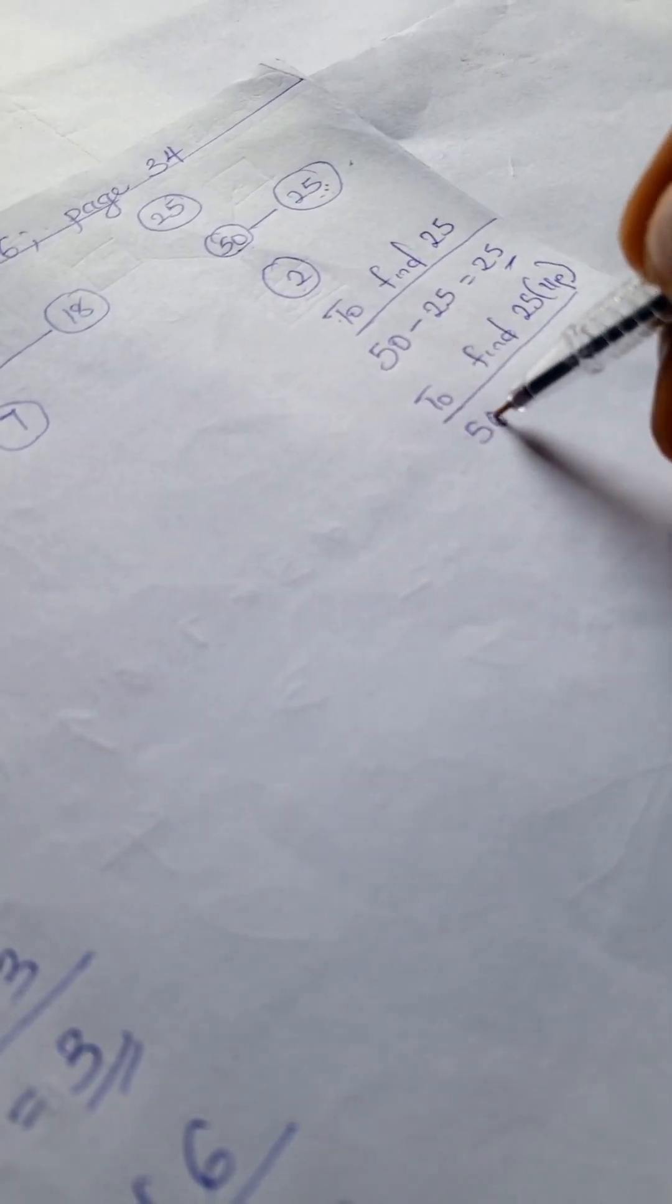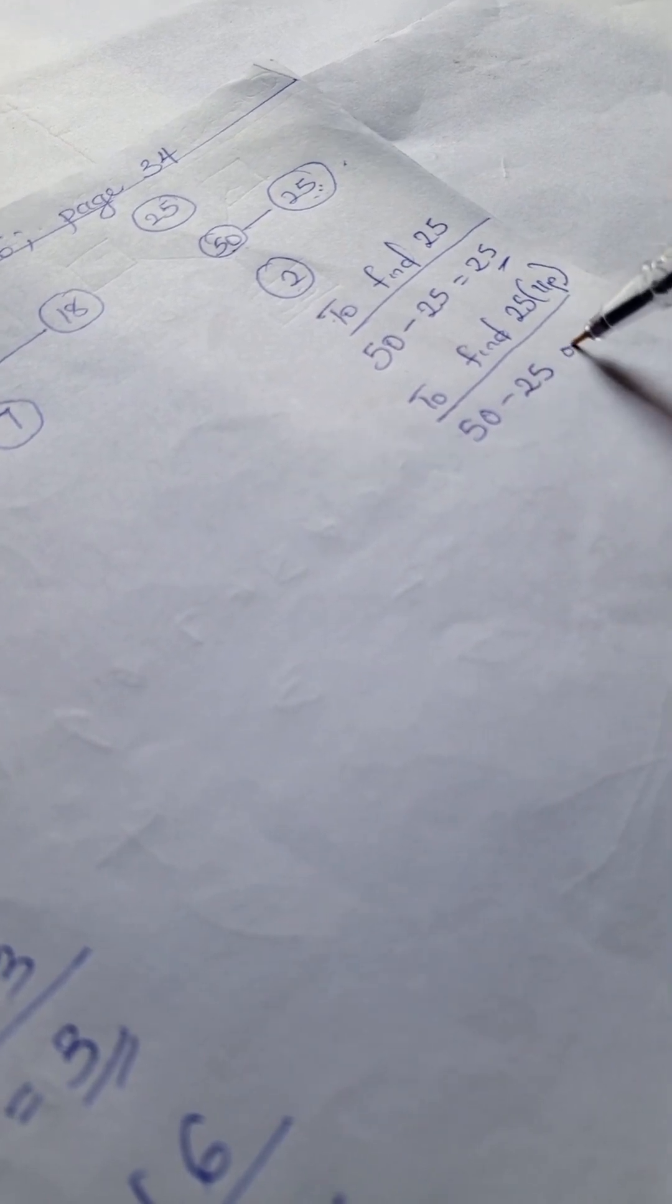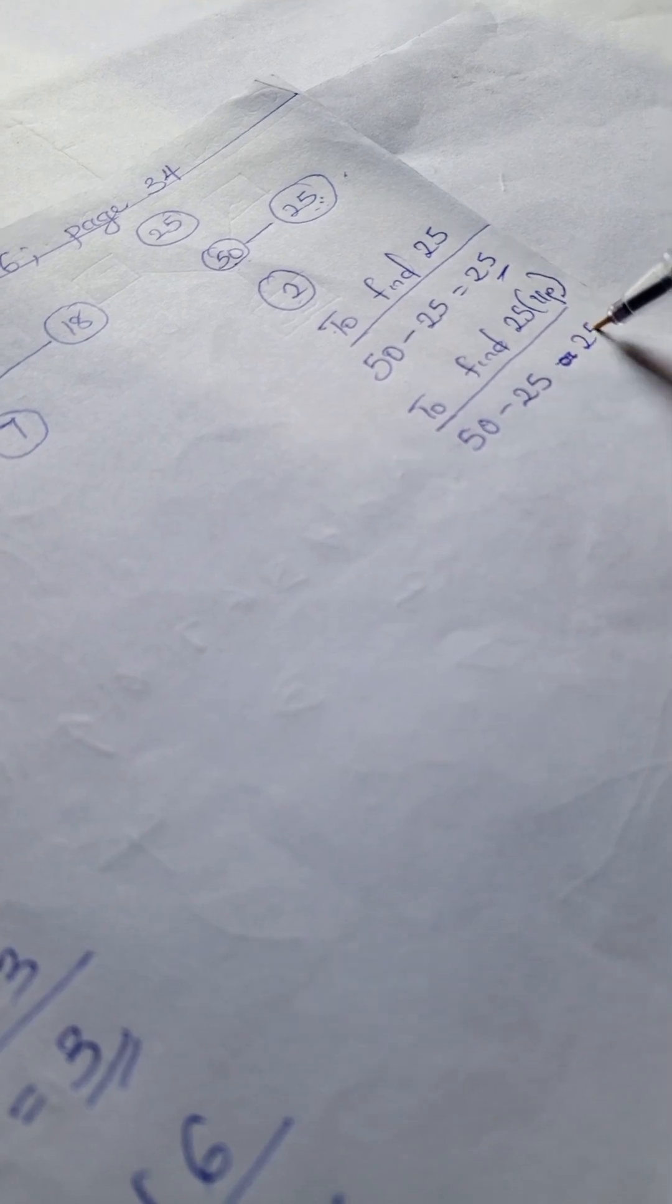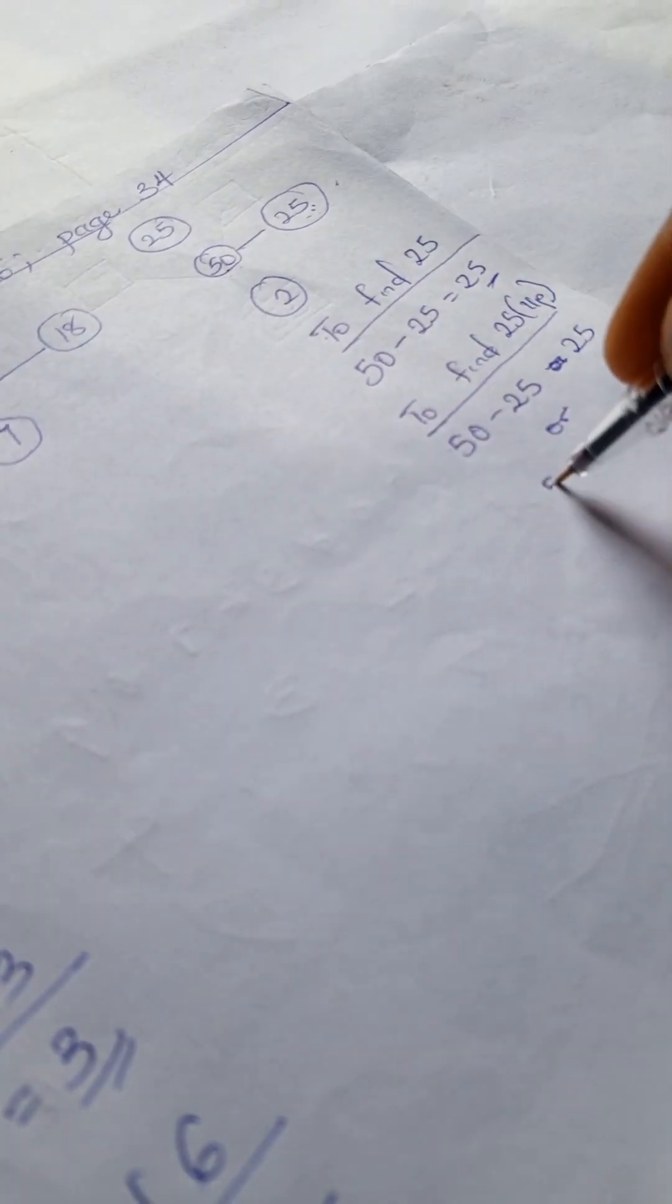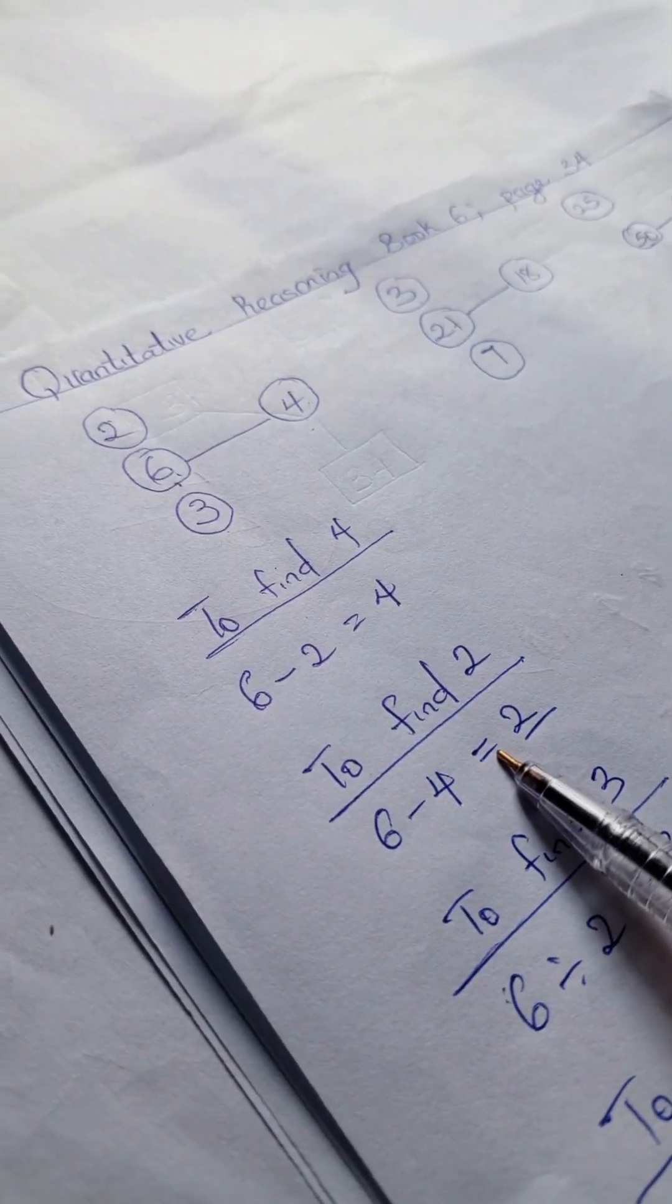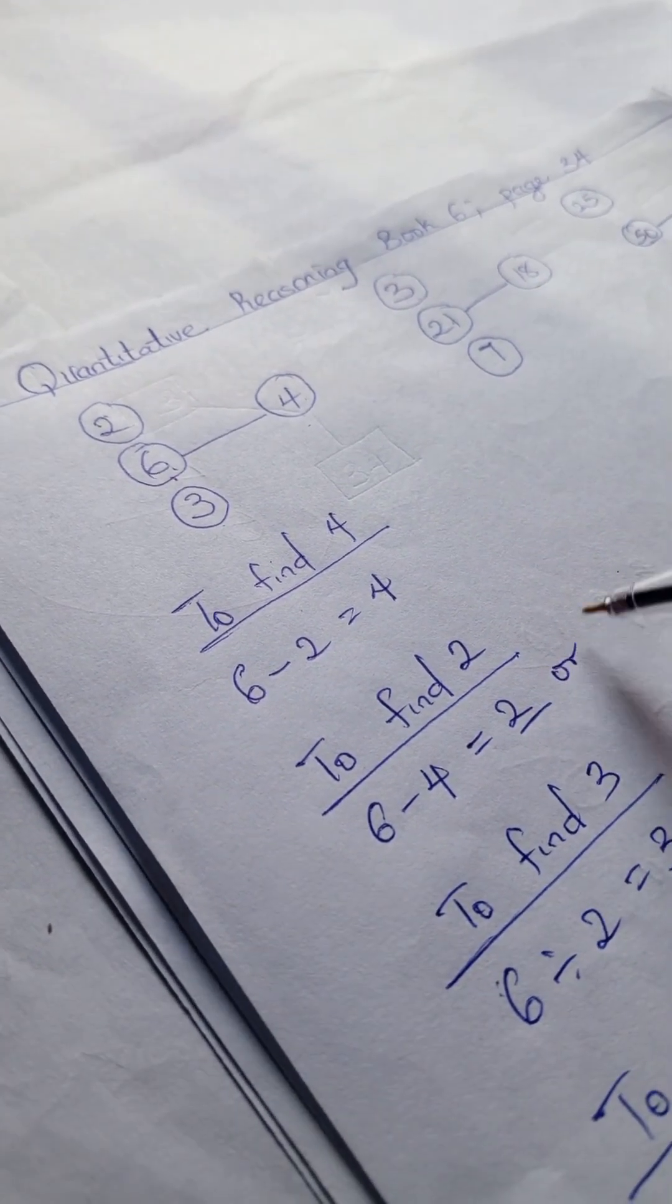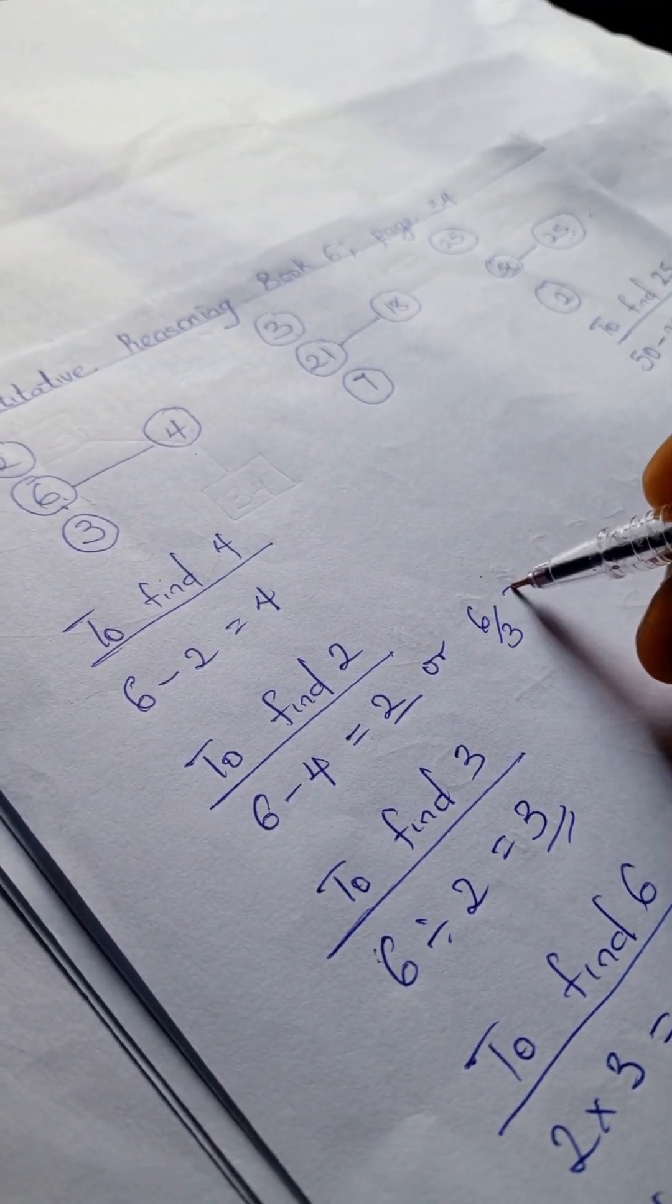50 minus 25, and that gives us 25. Or you can also have 50 here divided by 2, that gives us 25. So you can do the same thing here, or you can have 6 divided by 3.